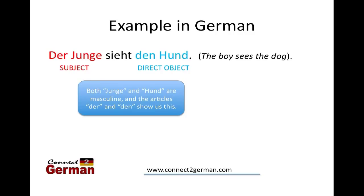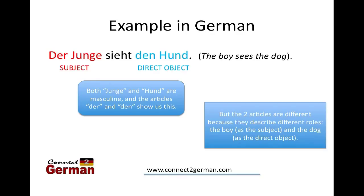How do we know that? If we look at these articles and genders: both Junge, 'boy,' and Hund, 'dog,' are masculine. The articles der and den show us this. But why are they different - why is it 'der' in one case and 'den' in another? It's because they're showing two different roles in the sentence. Junge is masculine and Hund is masculine, but if a word is the subject of the sentence, we use der in front of it - der Junge, the boy - as opposed to den Hund as the direct object.